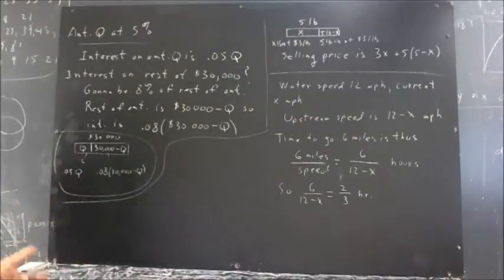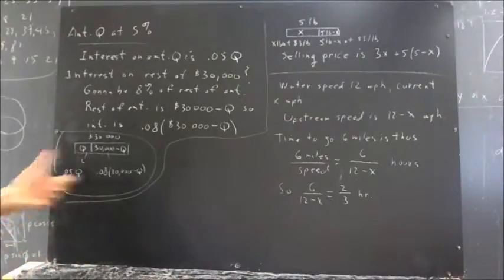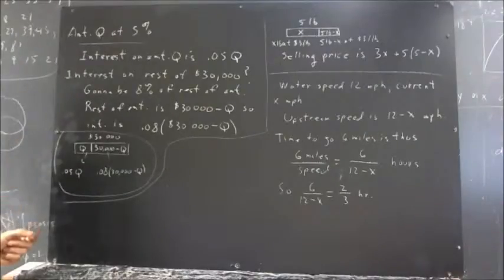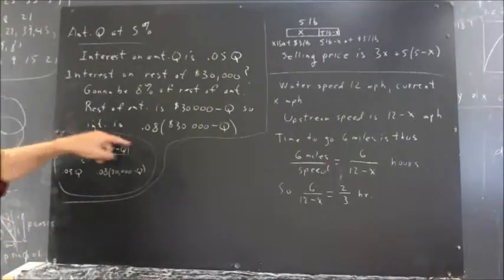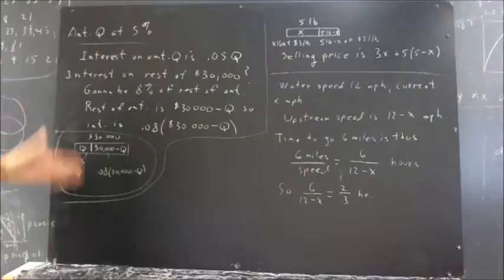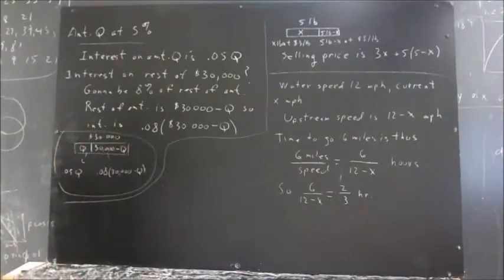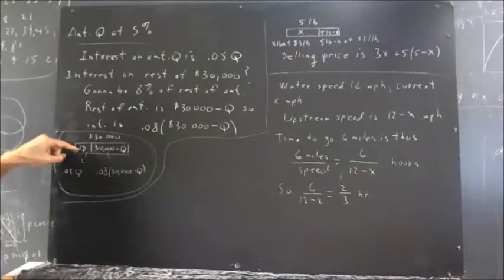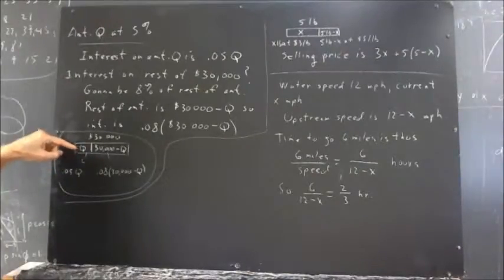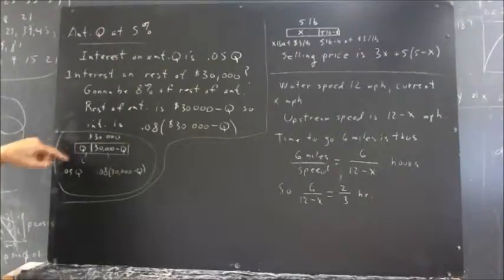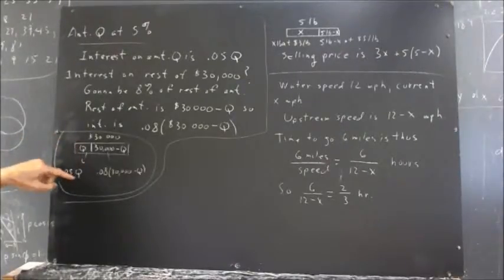Now, there's a picture you can draw to help yourself visualize this. If the picture makes sense to you, it's going to be worth taking a look at. You've got just a bar here, and this bar represents the whole $30,000. Here we have the amount that's invested at 5%, the amount Q. Invested at 5%, so the interest is 0.05Q.